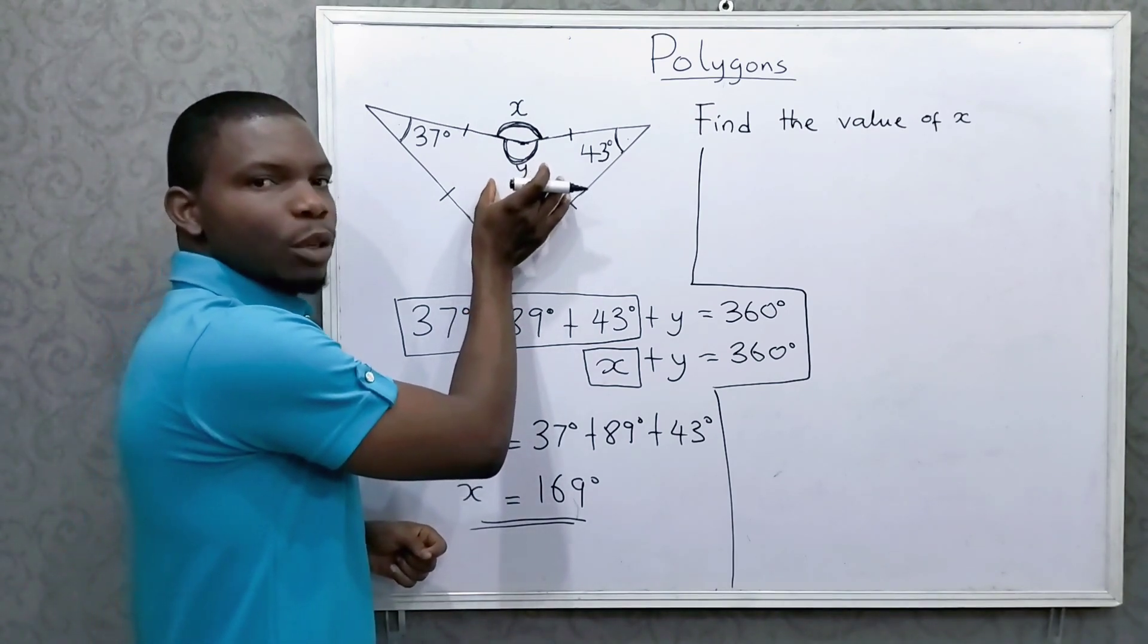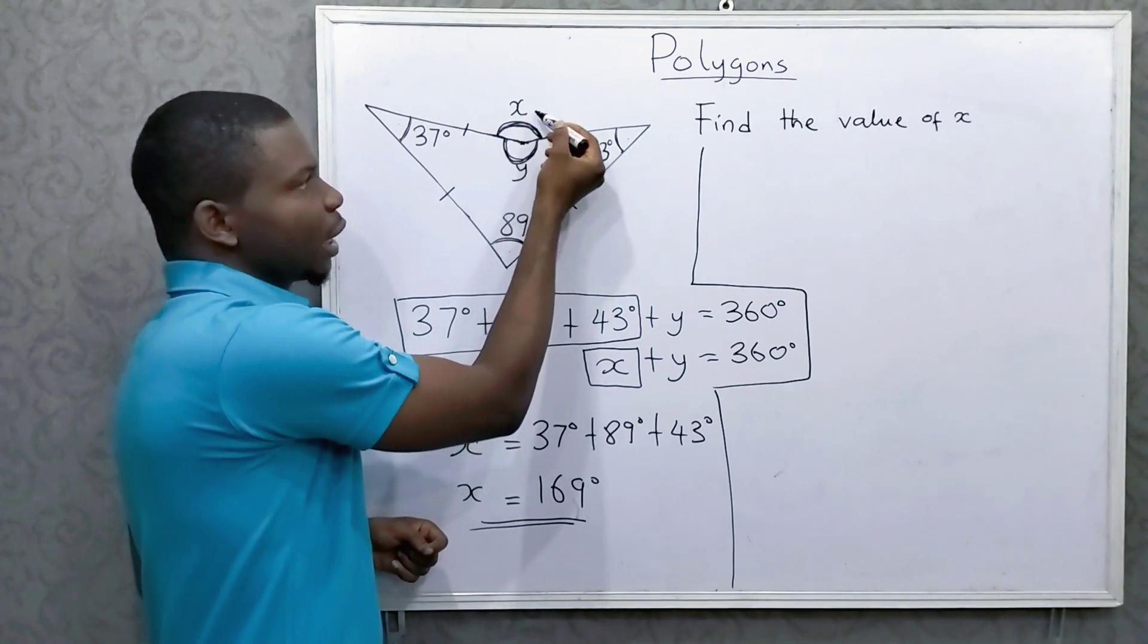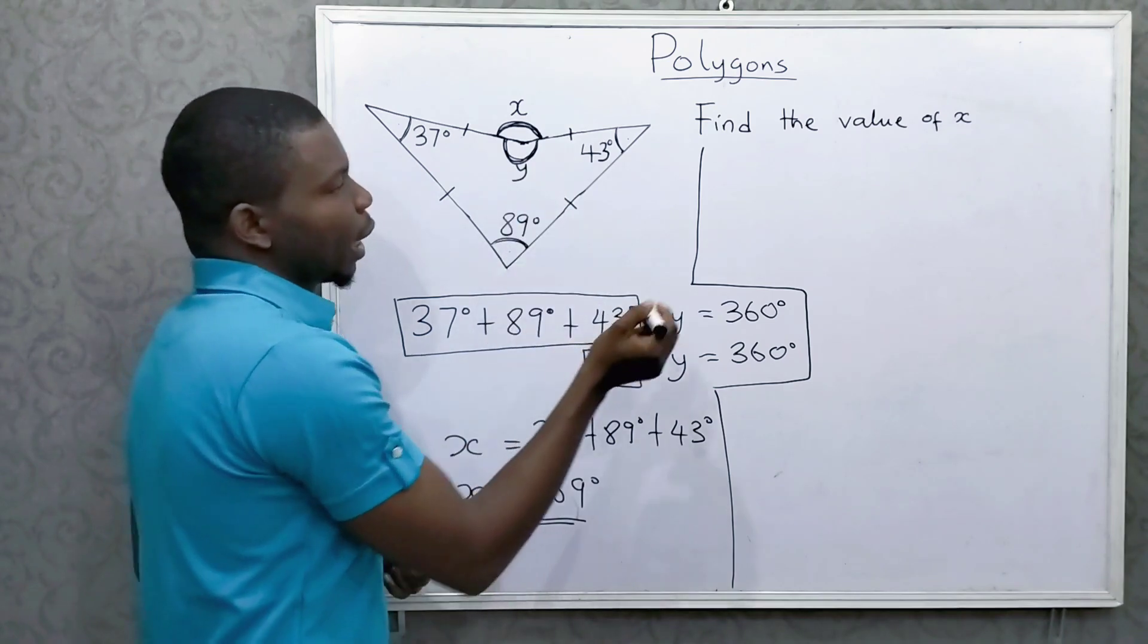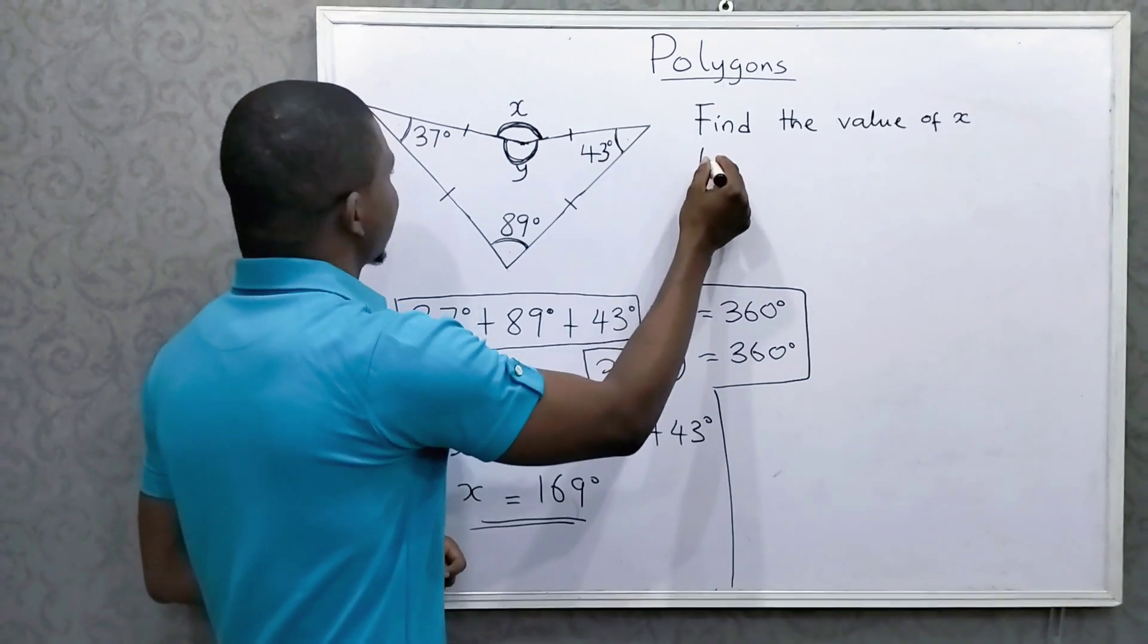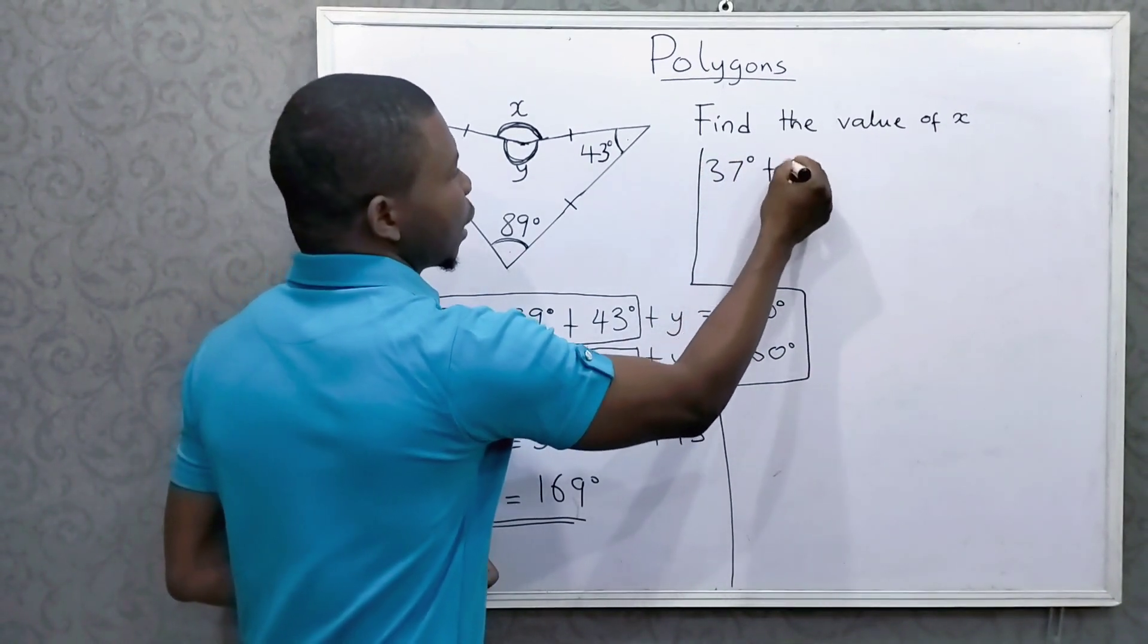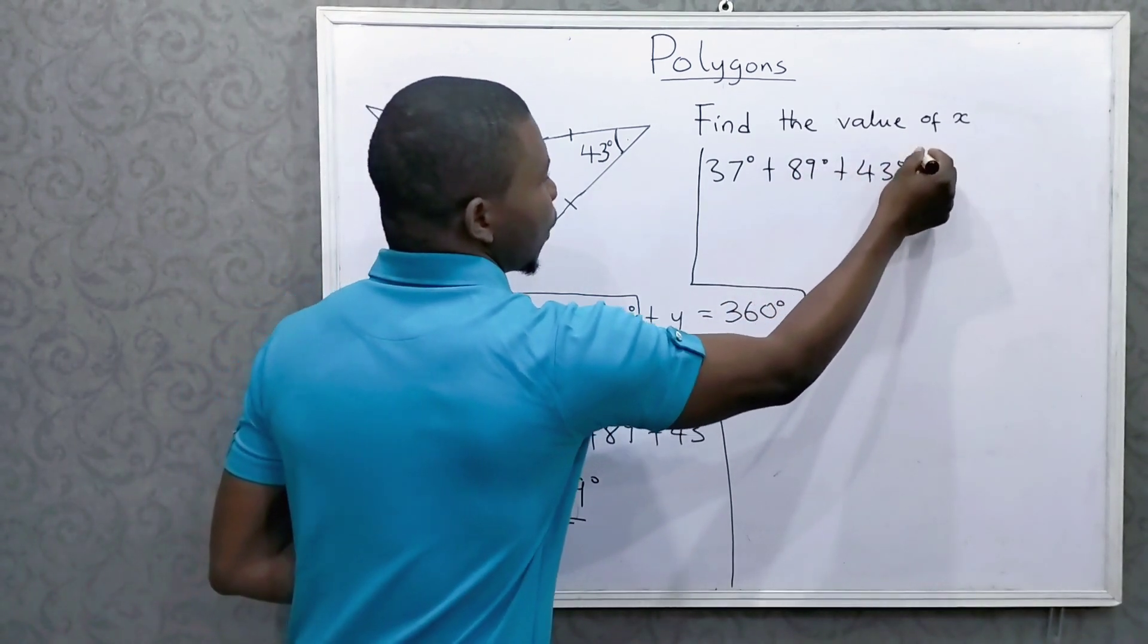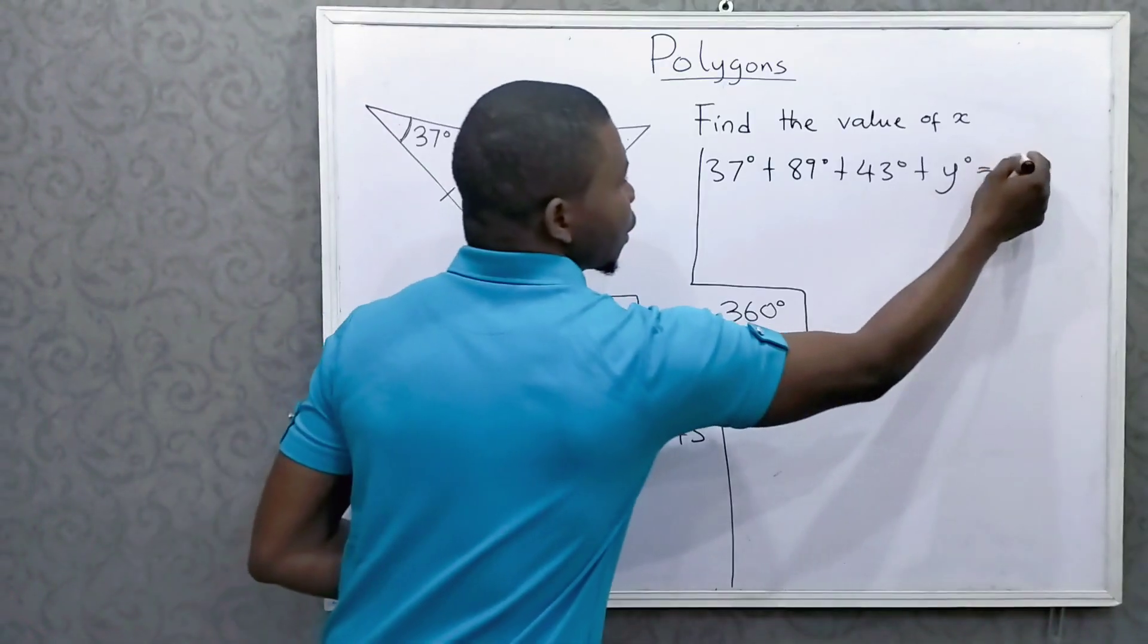So first of all, I might want to get the value of y. Then subtract it from 360 to get the value of x, right? So let's get the value of y. You know that when you add this to this to this and then to y, you get 360, right? So 37 plus 89 plus 43 plus y equals 360.